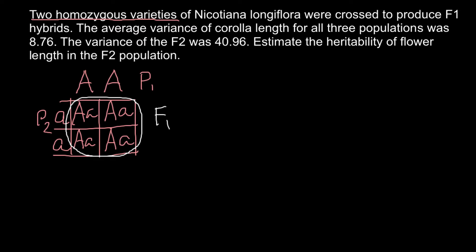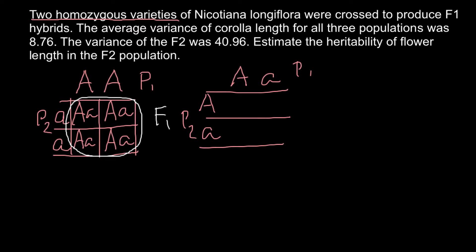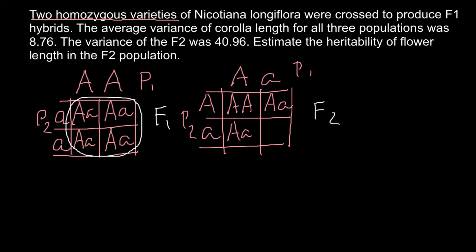Now here is what happens when we self-pollinate the F1 generation to produce F2. Taking the F1 genotype — heterozygous Aa — as both parents and crossing them gives us the F2 generation. As you can see, we now expect segregation of alleles into different genotypes: AA, Aa, and aa — three different genotypes in the offspring.